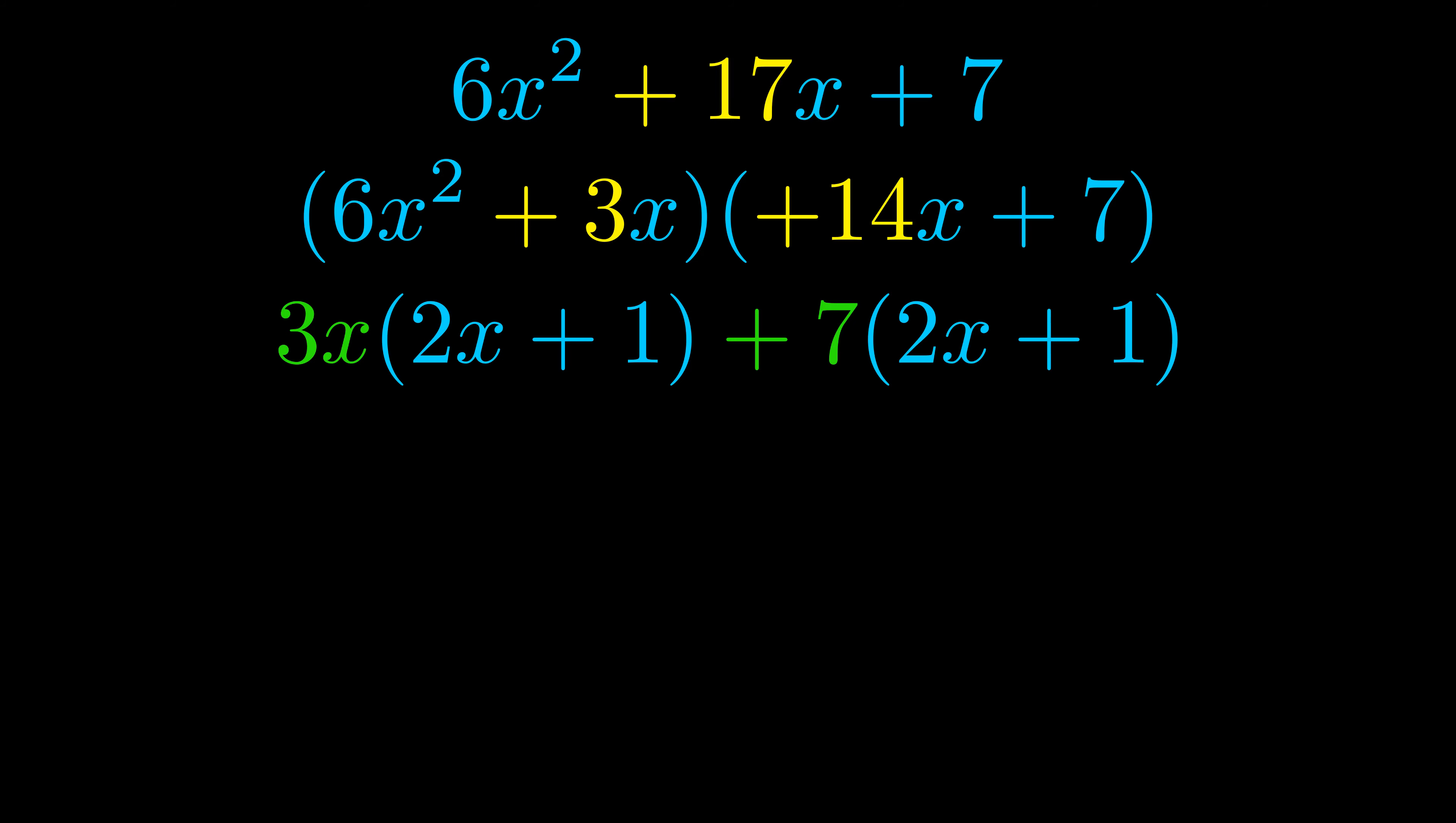Notice also how what remains inside of the parentheses is the same in both cases. The blue values are the same. Those blue values will become one of our factors and we will combine the two green values the GCFs that we pulled out to get the other one. And that is our fully factored equation.